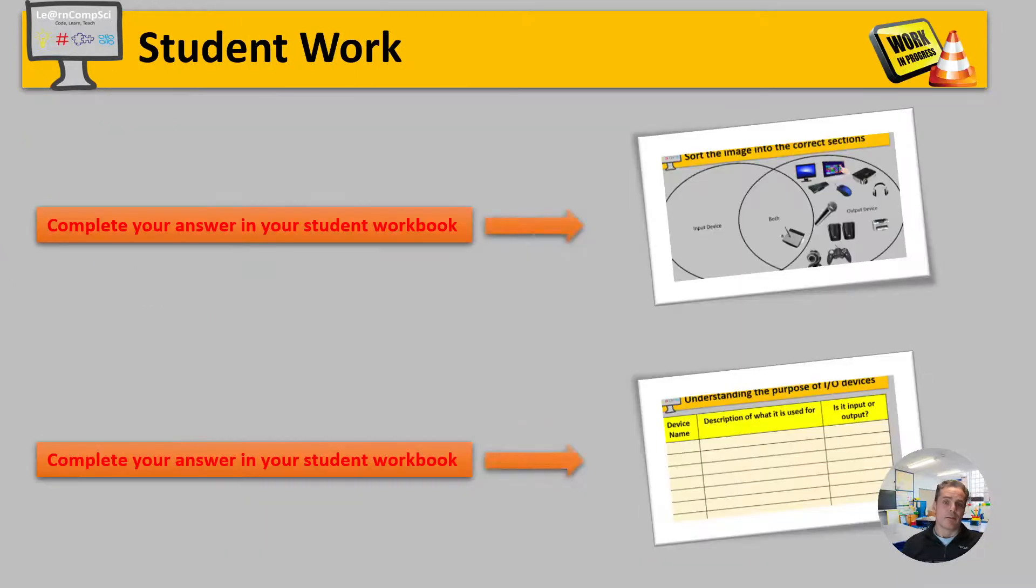Okay, so you've got a task to do now. Back in your workbook, there's two slides that you need to complete this time. The first one is a series of images of different devices, and you need to move them around the slide to determine if they're either an input device, an output device, or if you think you could categorize them as doing a bit of both. They're both an input and an output device.